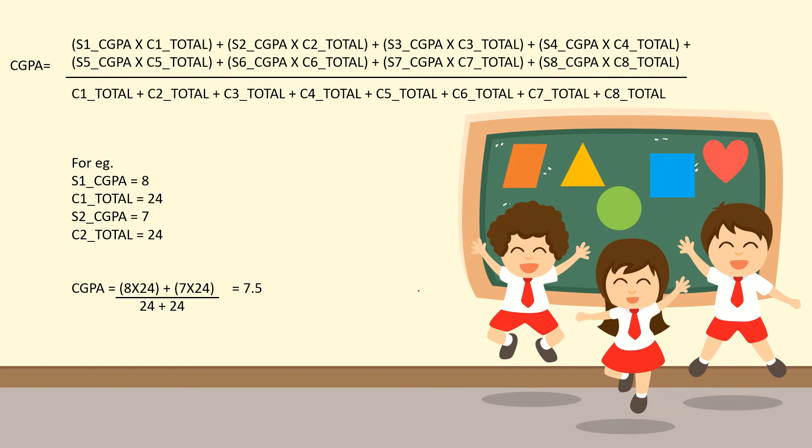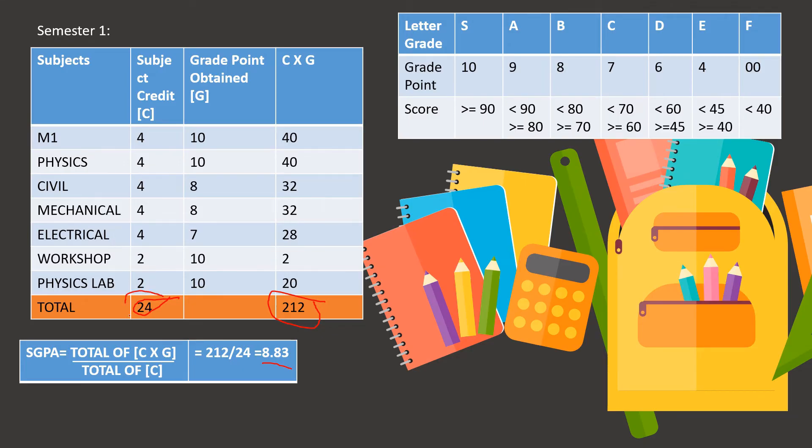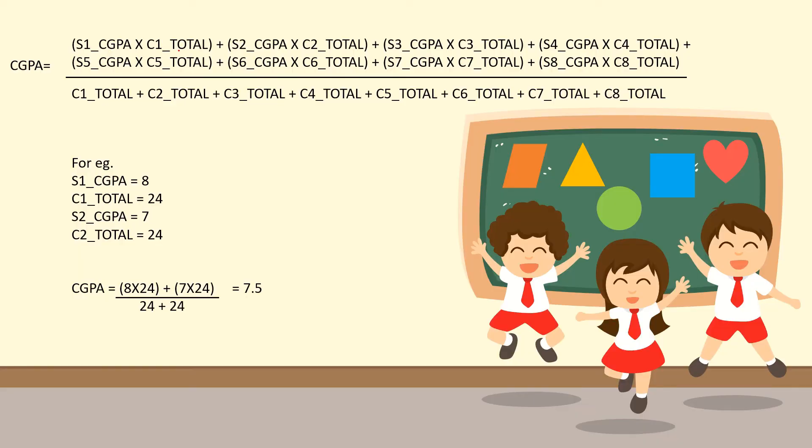Now coming to CGPA, suppose you have finished all your semesters, eight semesters and you want to know your CGPA. CGPA can be cumulative of two semesters also. I have taken the example for eight semesters. You will have to multiply the CGPA of each semester into the C total. So what is C total? This 24 is the C total for semester one and 8.83 is the CGPA for semester one. So here we can take 8.83 into 24 and the next semester two CGPA into C total of semester two and so on. Add everything and divide by the C total of each semester.